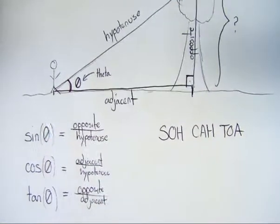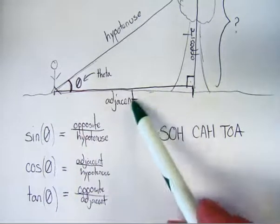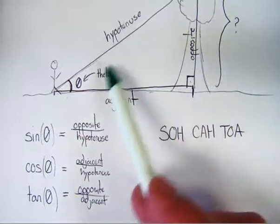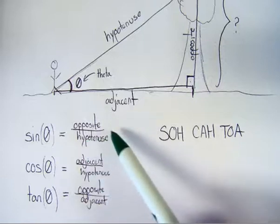So what that means is that we can use these functions to find either a missing side or a missing angle of any right triangle, provided I know the other two.